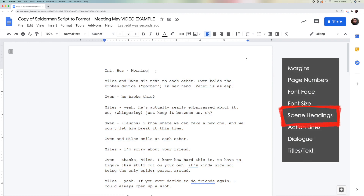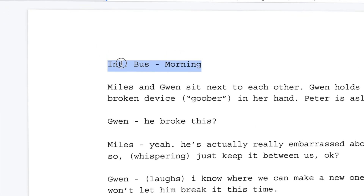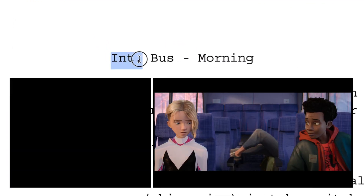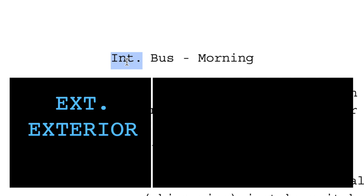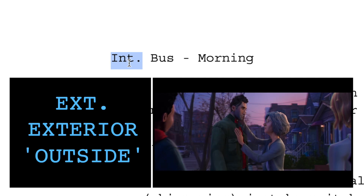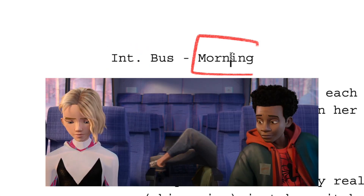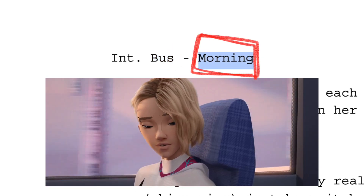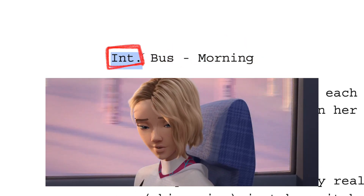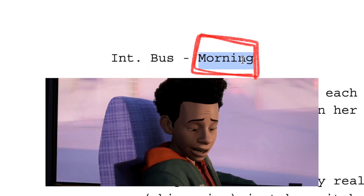The next thing we're going to change is the slug line. A slug line has three parts. The first part tells us if it's inside or outside. INT stands for interior and means inside. EXT stands for exterior and means outside. For this scene, it is interior of a bus, and it's in the morning. The second part tells us where it's happening, and the third part tells us the time of day.